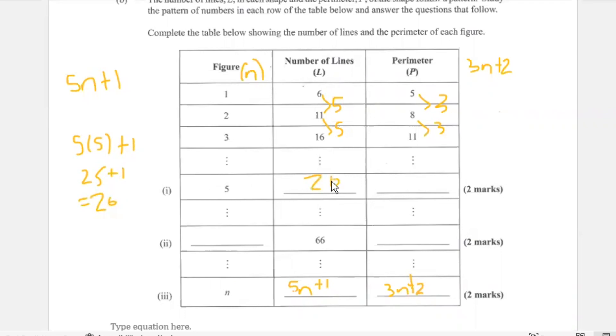What would be the perimeter when the figure number is 5? 17. So what we'll do is 3 times 5 plus 2. So 3 times 5 is 15 plus 2, and that gives us 17.